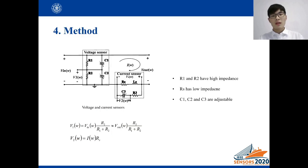The voltage and current signals of transducer are measured by the in-house voltage and current sensors. As shown in the figure, R1 and R2 have high impedance while RS have low impedance, which reduce power loss of the voltage and current sensors.